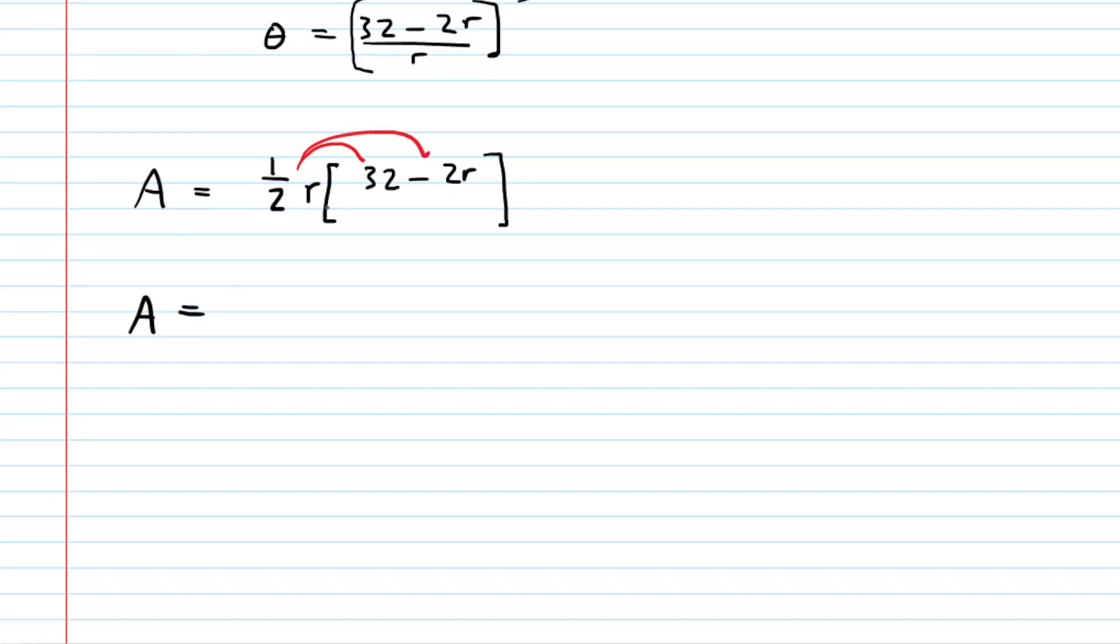One-half r times 32 is going to be 16r, and then minus one-half r times the 2r is just going to be 1r squared. So that's a really nice-looking objective equation. We wish to maximize this area.